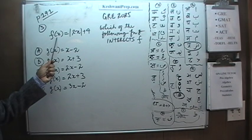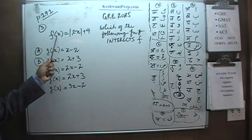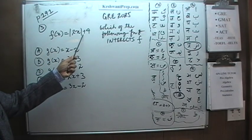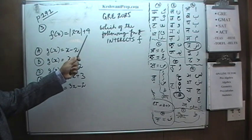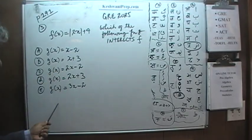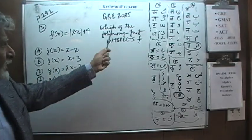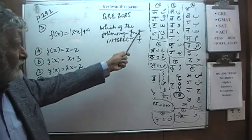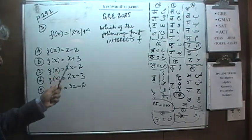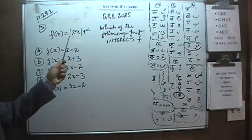We are given a function called f. f(x) is the absolute value of 2x plus 4. The question simply is: which of the following functions — they are calling this function g — will intersect f? We just have to locate one that is going to intersect this graph.